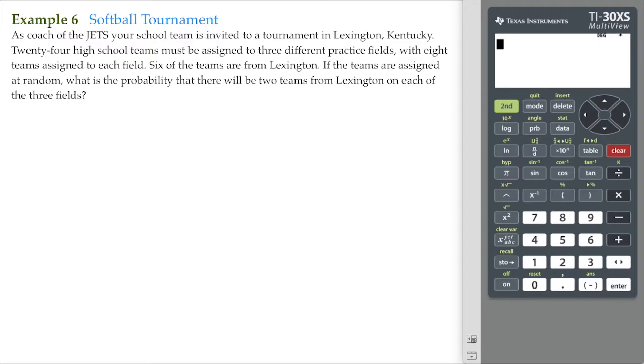24 high school teams must be assigned to three different practice fields, with eight teams assigned to each field. Six of the teams are from Lexington. If the teams are assigned at random, what is the probability that there will be two teams from Lexington on each of the three fields?